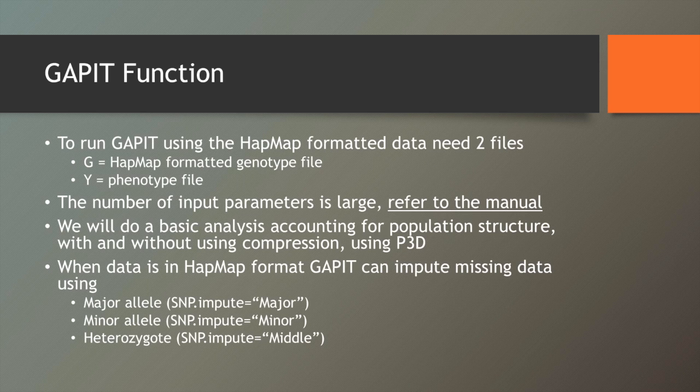So to run GAPIT with the HapMap formatted data, we need two files, the genotype file and just the phenotype file. In the actual code, there's a bunch of parameters, and again, refer to the manual. There's more than I can cover today. And so today we'll just do a basic analysis, accounting for population structure, using compression and not using compression and P3D.